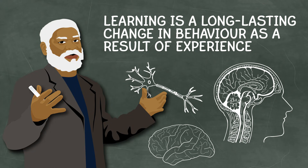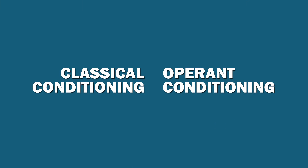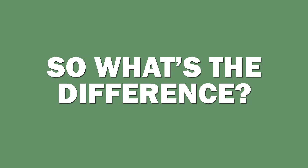Psychologists define learning as a long-lasting change in behavior as a result of experience. Classical and operant conditioning both lead to learning. So what's the difference between them?